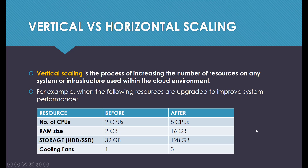What is vertical scaling? Vertical scaling is the process of increasing the number of resources on any system or infrastructure used within the cloud environment. An example is when the following resources are upgraded to improve system performance. The number of CPUs on the system has been increased from 2 CPUs to 8 CPUs, and the RAM size increased from 2GB to 16GB.